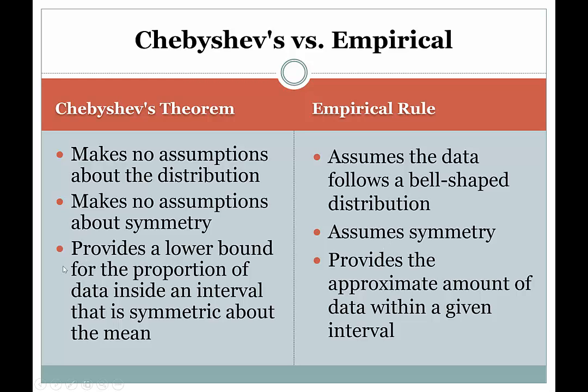For Chebyshev's theorem, the theorem can only give us a lower bound for the proportion of data inside an interval, and that interval also has to be symmetric about the mean — it has to have equal space above the mean and equal space below the mean. Chebyshev's theorem is very versatile since it can be used for any data distribution, but the trade-off is that it cannot give us approximate or precise answers. It only gives us a lower bound for the amount of data inside an interval, and that interval must be symmetric about the mean.